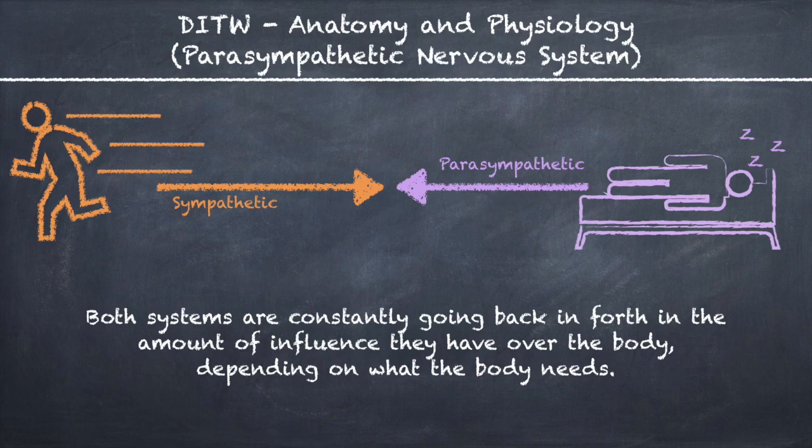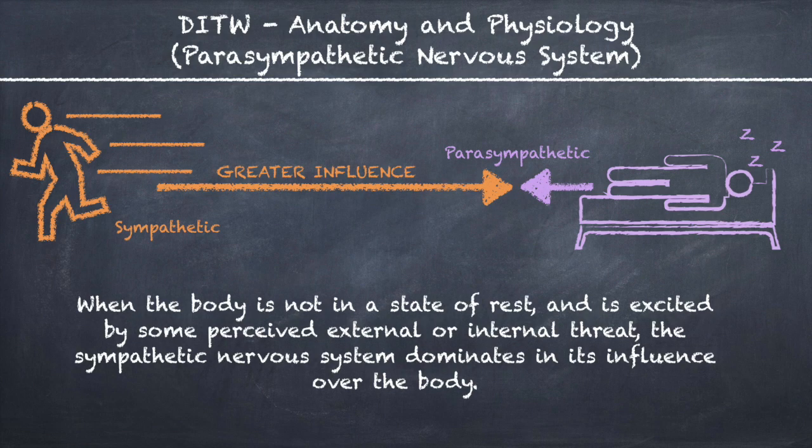Both systems are constantly going back and forth in the amount of influence they have over the body, depending on what the body needs. When the body is not in a state of rest and is excited by some perceived external or internal threat, the sympathetic nervous system dominates in its influence over the body.